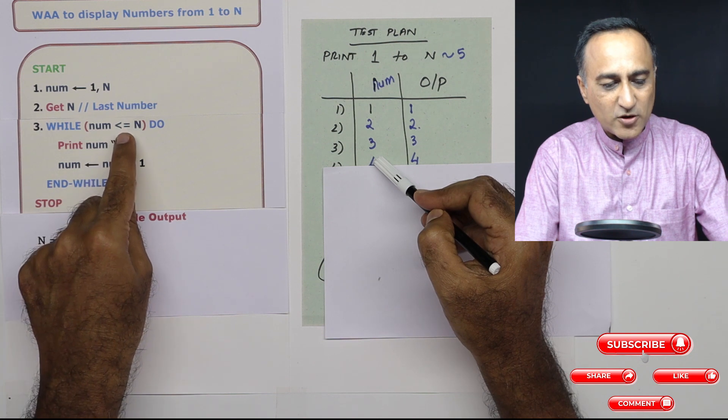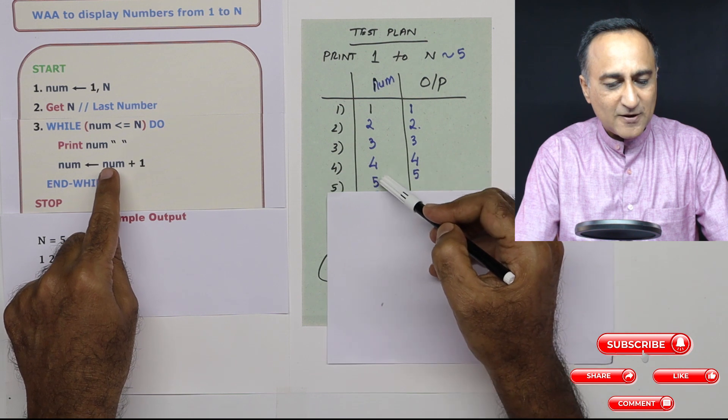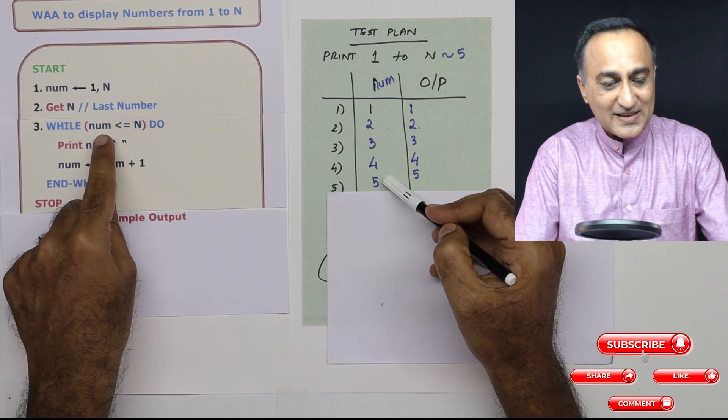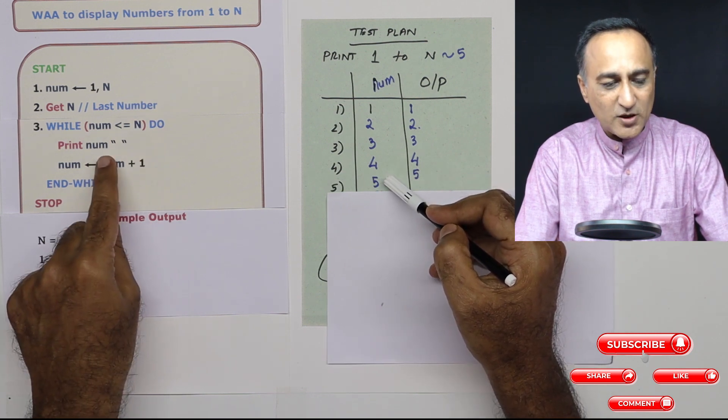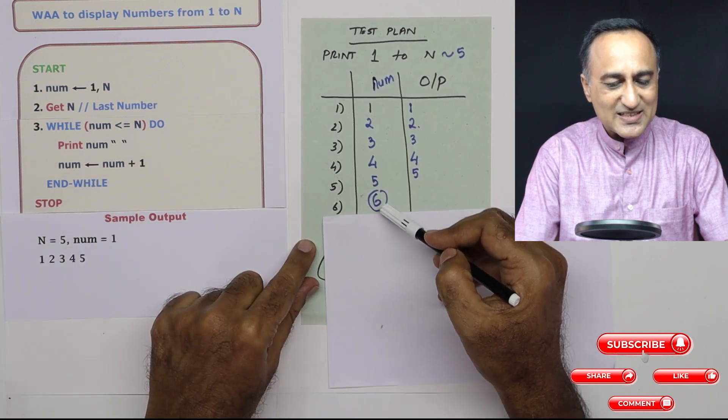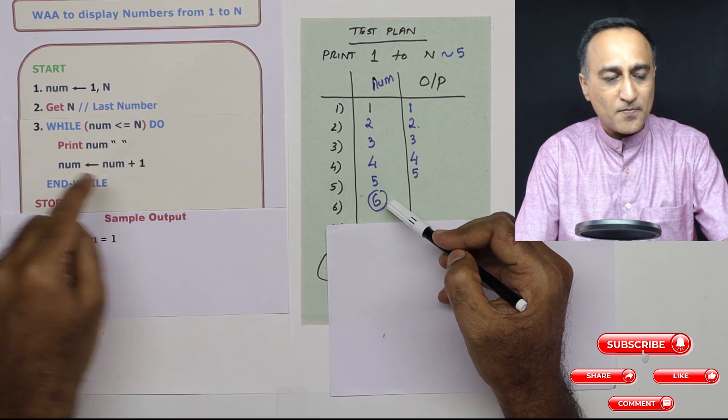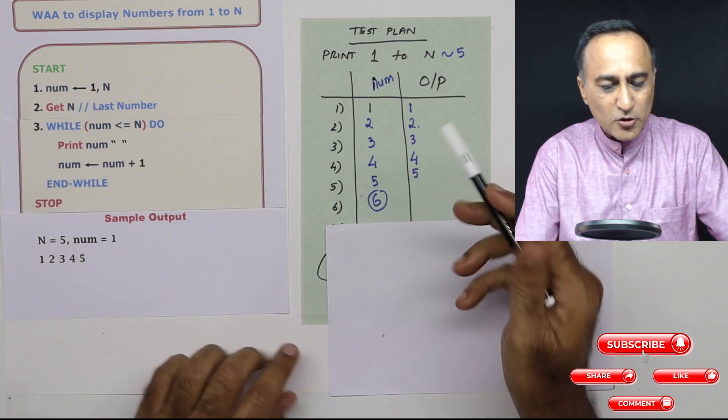Four is less than or equal to five, then print number, it's going to print four, number becomes five. Five is still equal to five. So we are still okay, print five, number at this point becomes six. When it becomes six, then this condition is no longer true, then I'm going to come here and I'm going to stop.